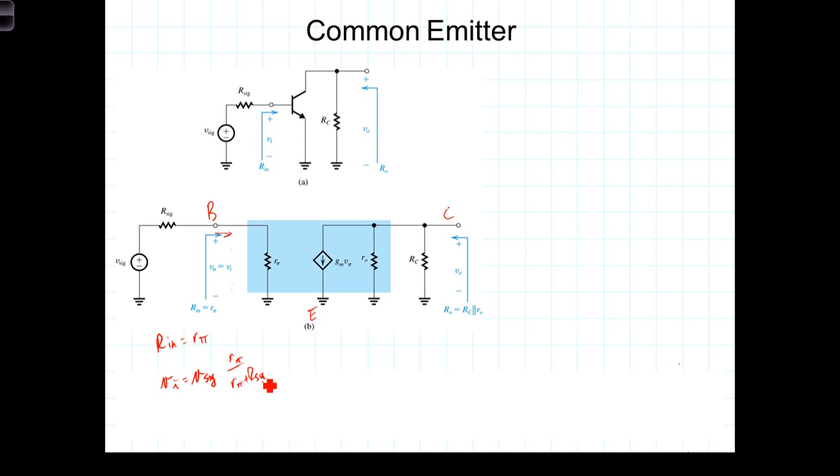R out can be determined by deactivating the signal, turning it to zero, which then makes V in, or as it's referred to here, V pi equals zero. So deactivating the signal then has the effect of making this dependent current source zero,